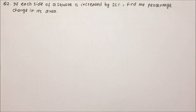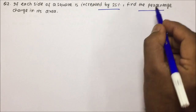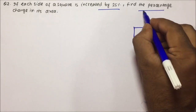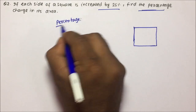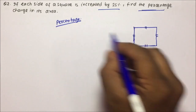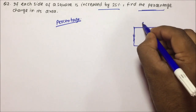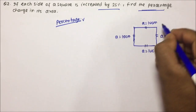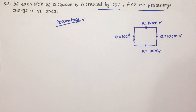Moving towards question number 2. If each side of a square is increased by 25 percent, find the percentage change in its area. Whenever percentage is asked in a question, we can assume any value and solve. So here I am going to assume each side of the square is 10 centimeters.